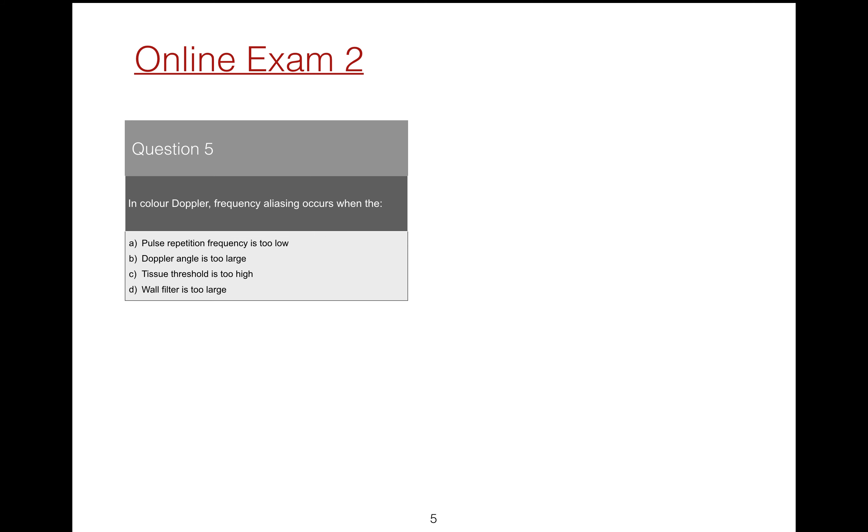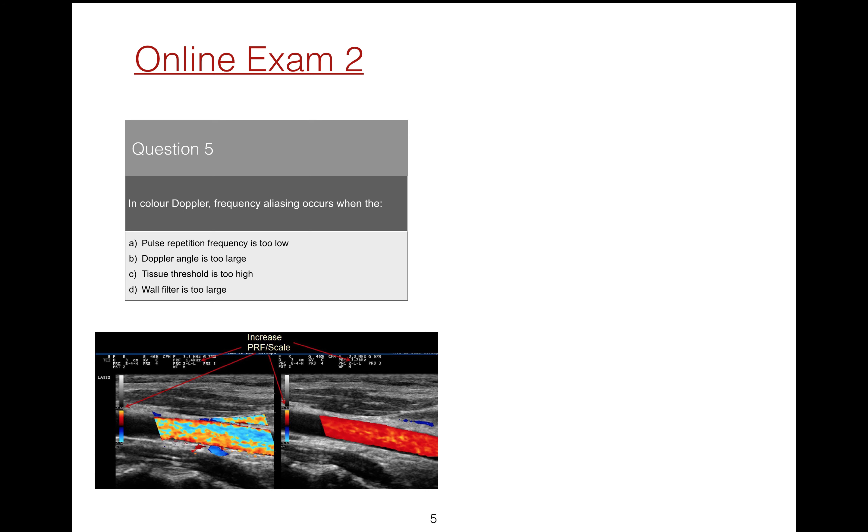Question 5: In color Doppler, frequency aliasing occurs when? It occurs when the pulse repetition frequency is too low. And this can be corrected by increasing the color scale.